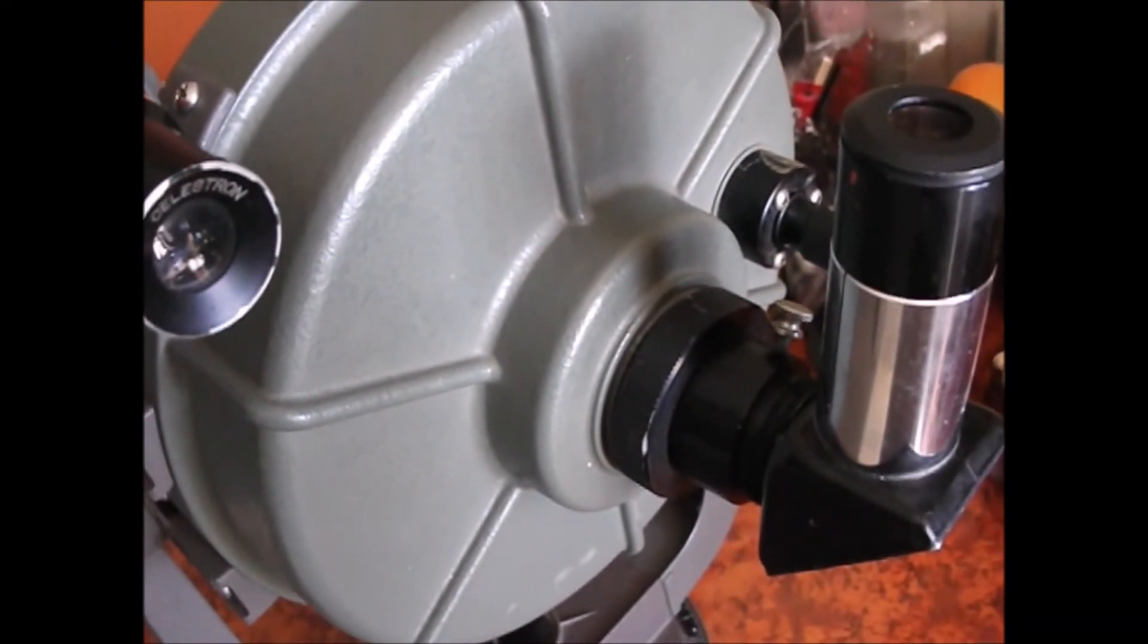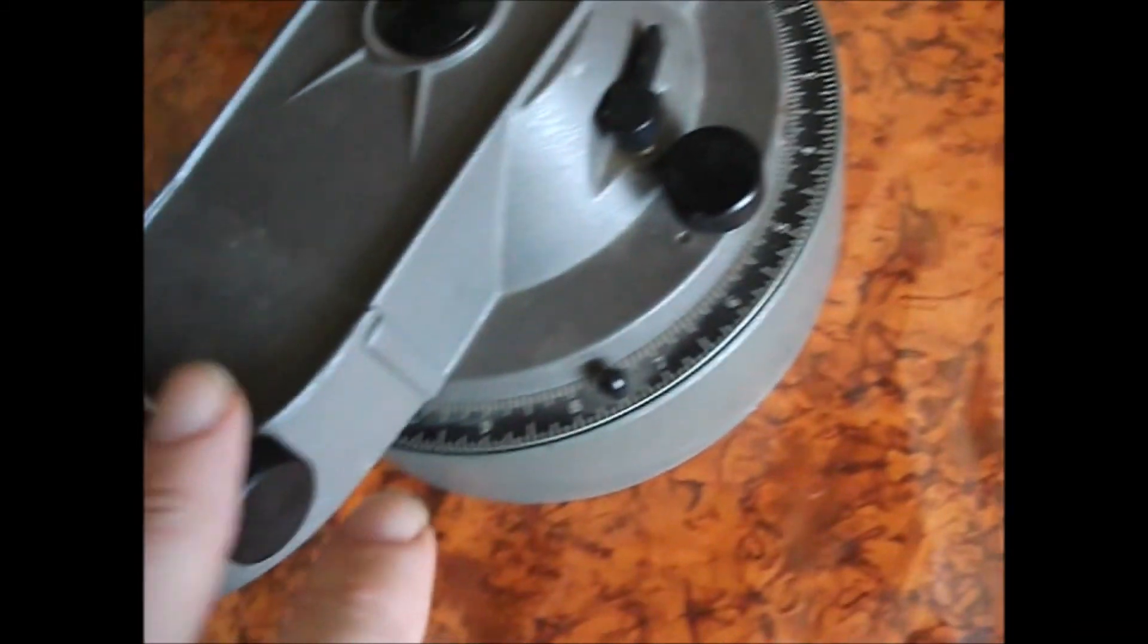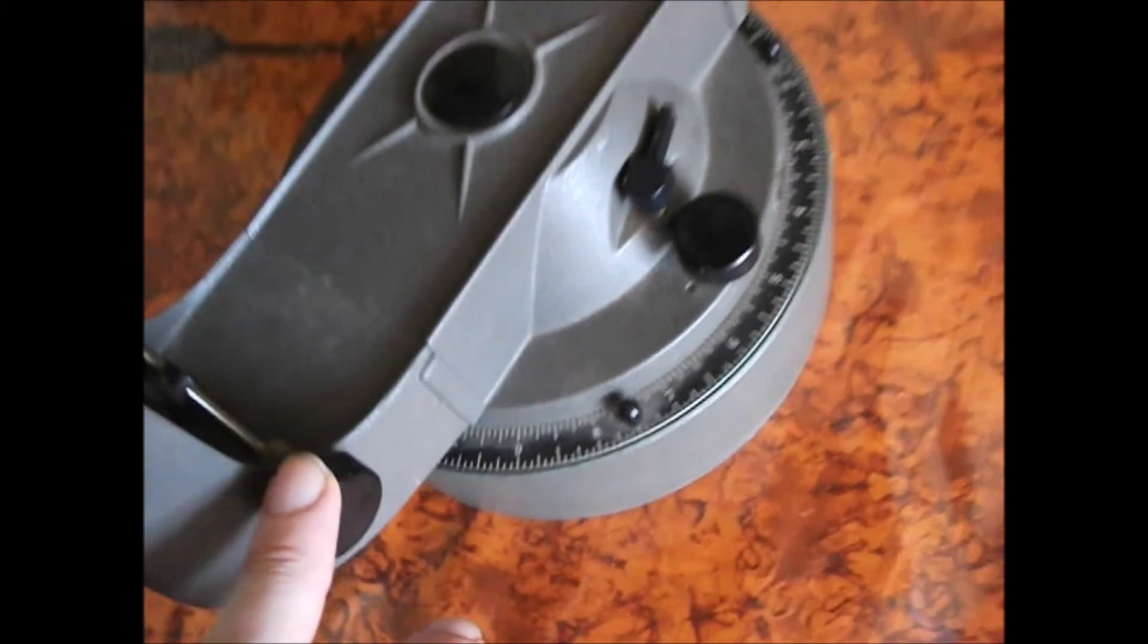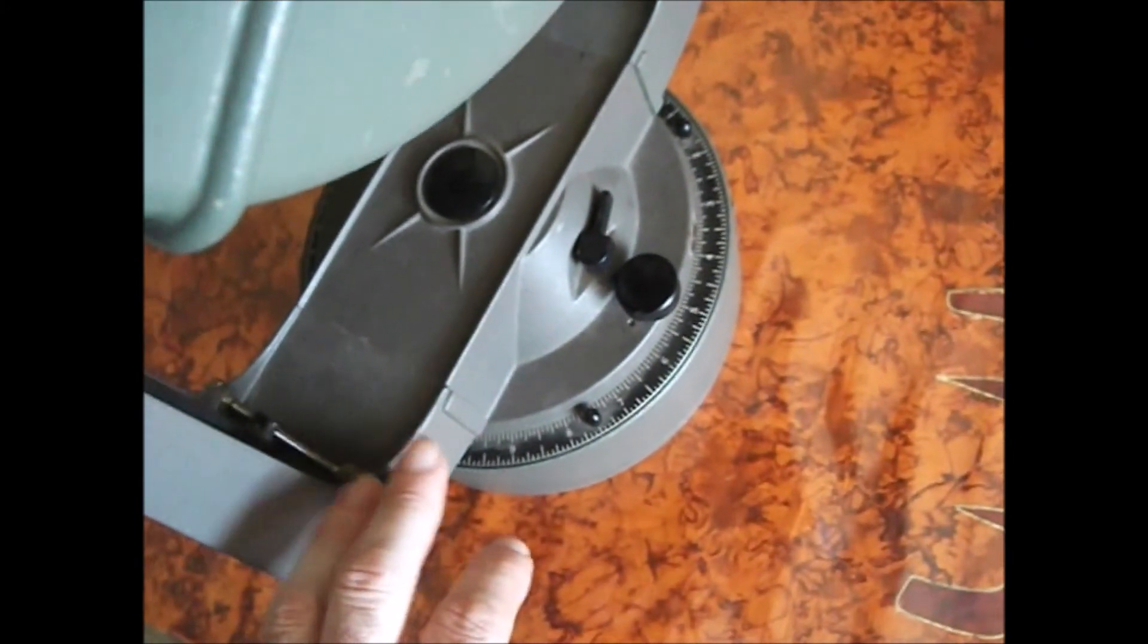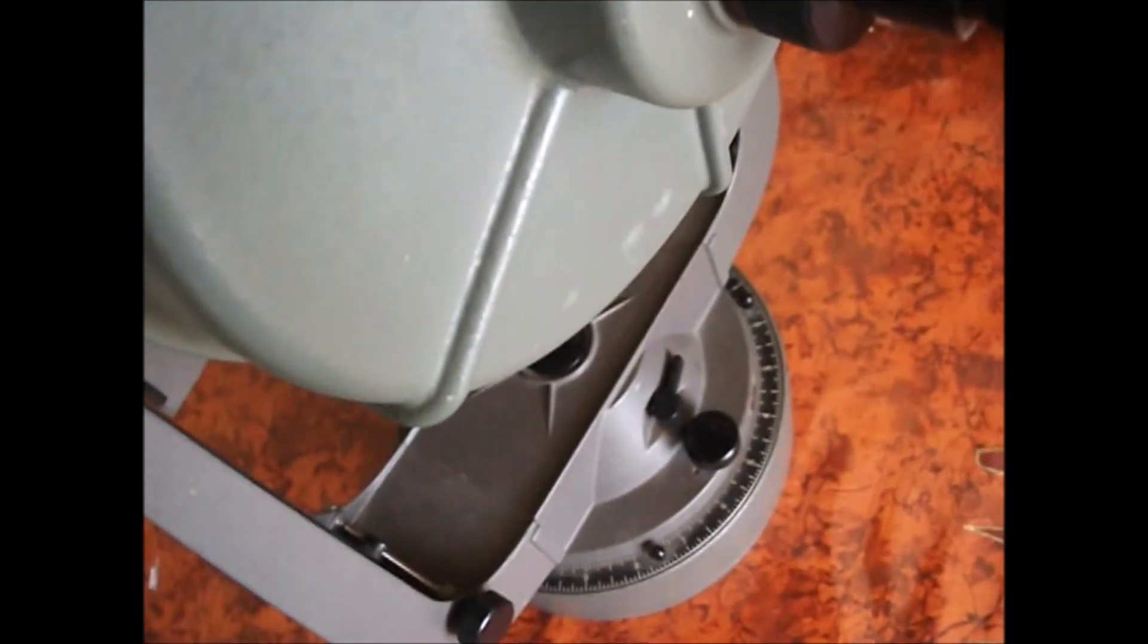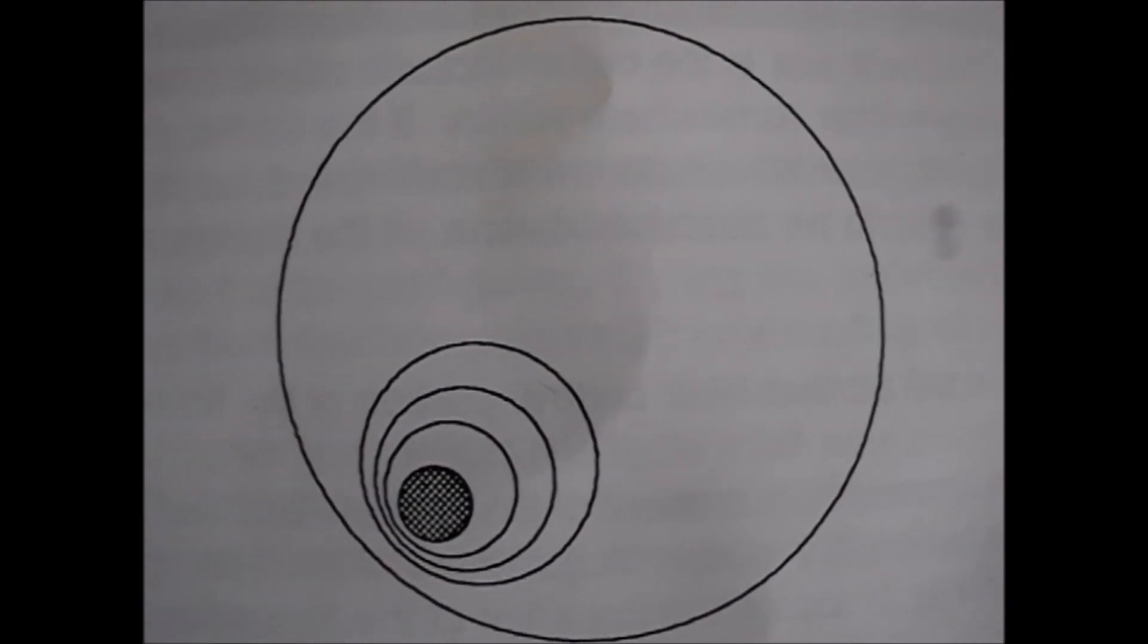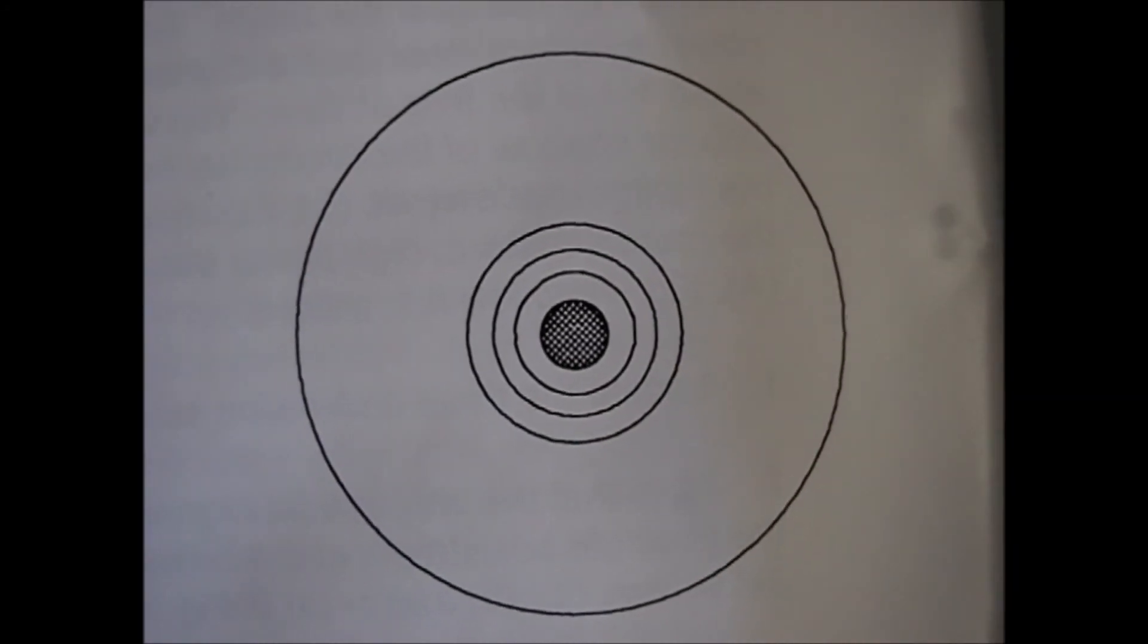Once you've got the light source defocused in the viewfinder, it's very important to use both the right ascension and declination slow motion control knobs to centralize the image in the eyepiece. Every time you do a small adjustment on the secondary mirror, always return to the RA and declination knobs to make sure the image is always re-centralized in the eyepiece. By slow, steady adjustments, you can turn an image like this into this, and then eventually to a perfectly aligned telescope.